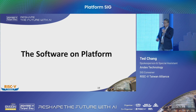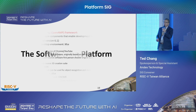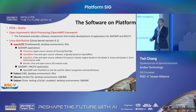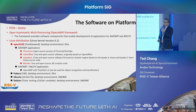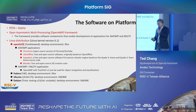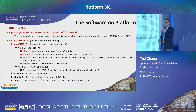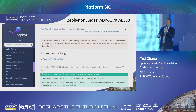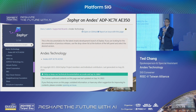Let me introduce the software we have already ported on our platform. This page shows what kind of software is already ported. That includes Zephyr from Andes, OpenAmp, and of course the most important — Linux distributions, including OpenSUSE, Fedora, and so on. We will introduce the software in more detail later. Those software packages are already installed on our demo site, so if you have time, please visit our booth to see the software demo. If you have any questions, you can talk to our experts.